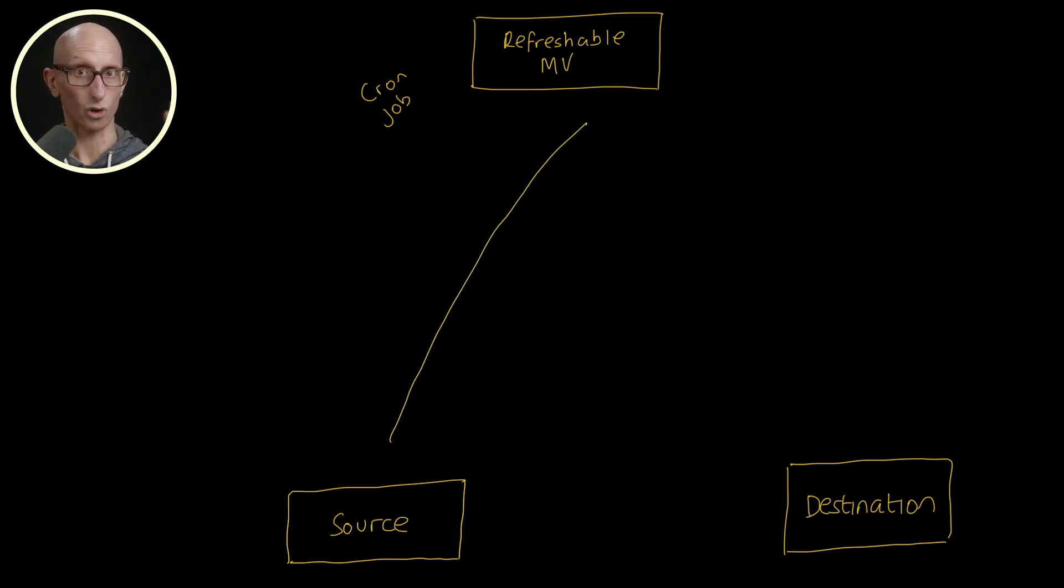This time, the materialized view runs against all the data in the source table, and then it writes it to a staging table. This means that people can continue to query the destination table while the materialized view is running.